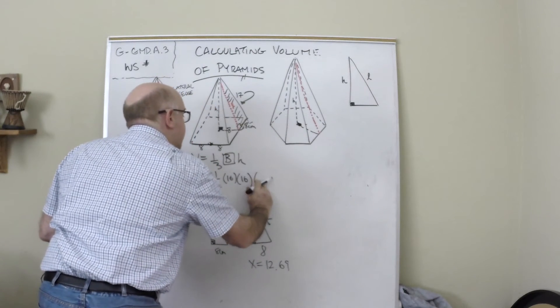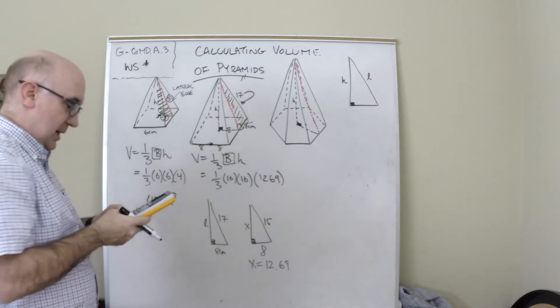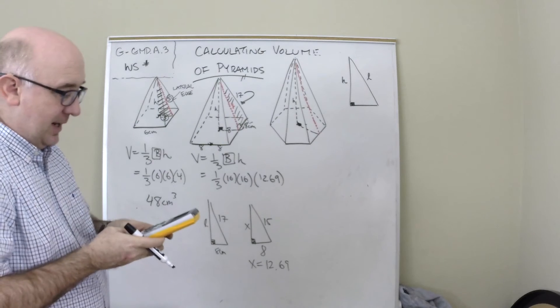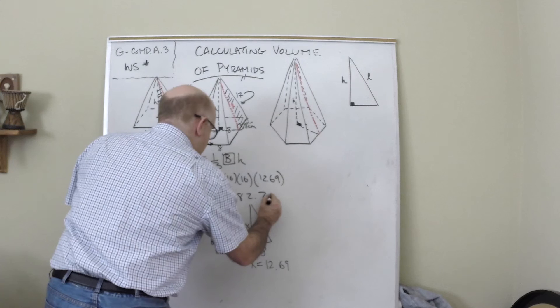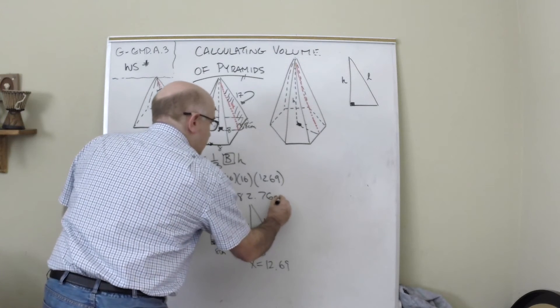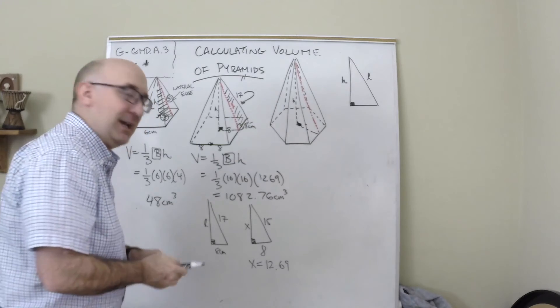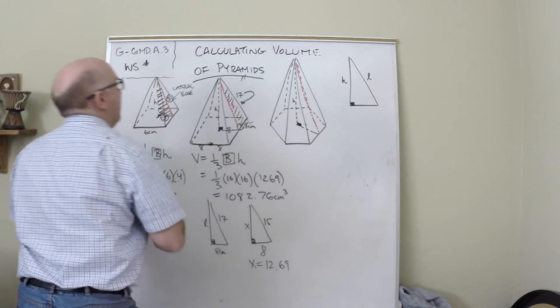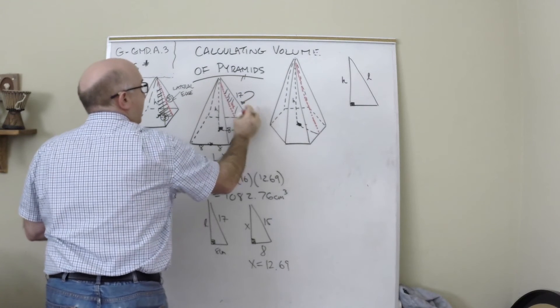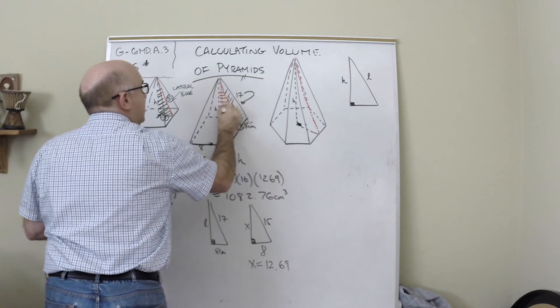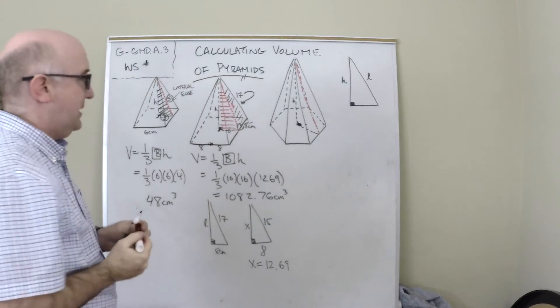This isn't going to be as friendly a number. If I do the math here, I'm going to find that x, which happens to be our height, is 12.69. That goes into this spot at 12.69, and then I multiply that by 256 and divide by 3 and do a little rounding. I get 1082.76 centimeters cubed. So that one was doubly tricky, but I wanted to show you one like that. The reason it was tricky is I was working out here on this front face and then I had to go into the inner triangle to get the actual height.